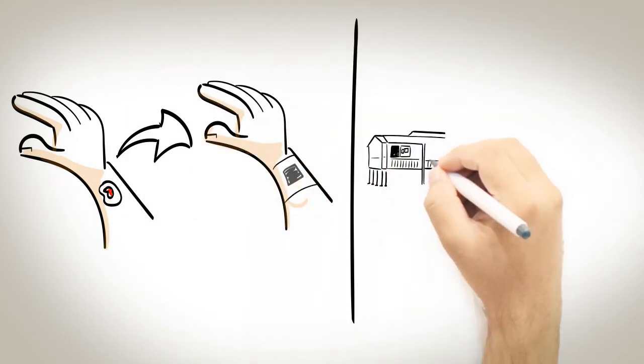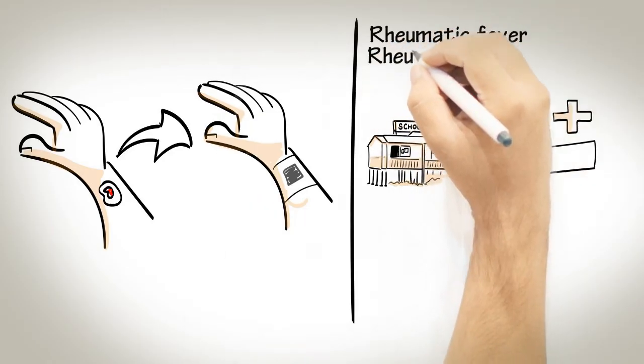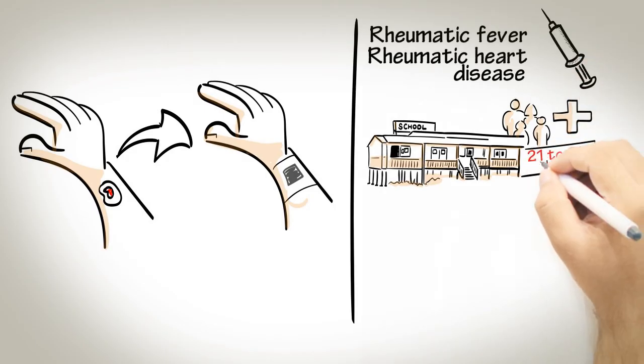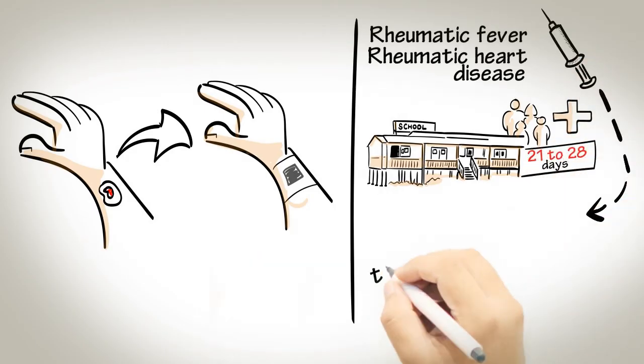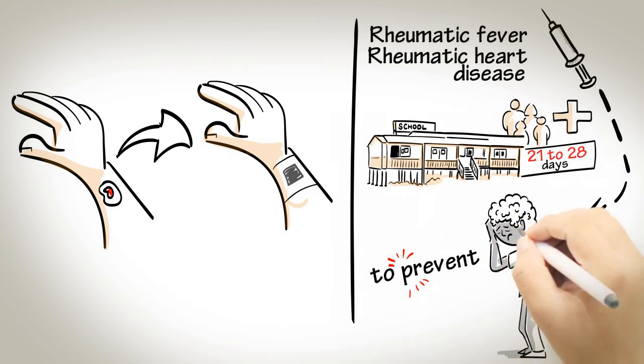Work together with the school, health services and community to encourage the children who have had rheumatic fever or who have rheumatic heart disease to get regular antibiotic injections every 21 to 28 days. These injections are the best way to prevent further rheumatic fever and manage rheumatic heart disease.